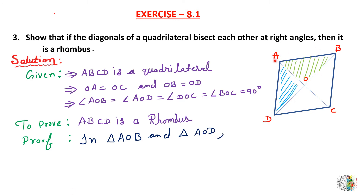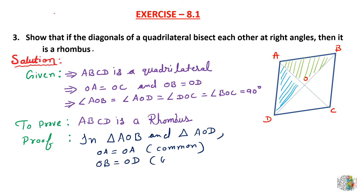In triangles AOB and DOA: OA is equal to OA, as it is a common side. OB is equal to OD, because this is given — the diagonals bisect each other.